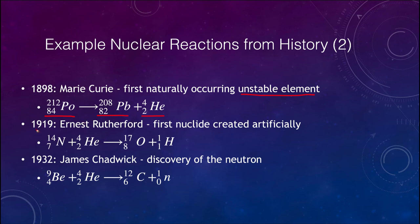Another example is Ernest Rutherford's, which was the first nucleus created artificially. When nitrogen is bombarded with alpha particles or helium nuclei, it can form an isotope of oxygen plus hydrogen. Note that the mass numbers are balanced — 18 on each side — and the charges are balanced — 9 and 9.